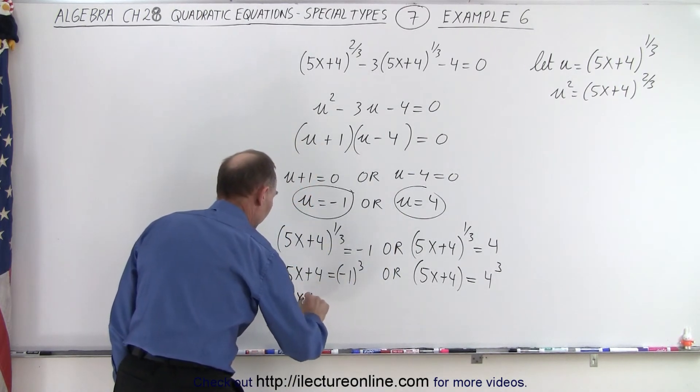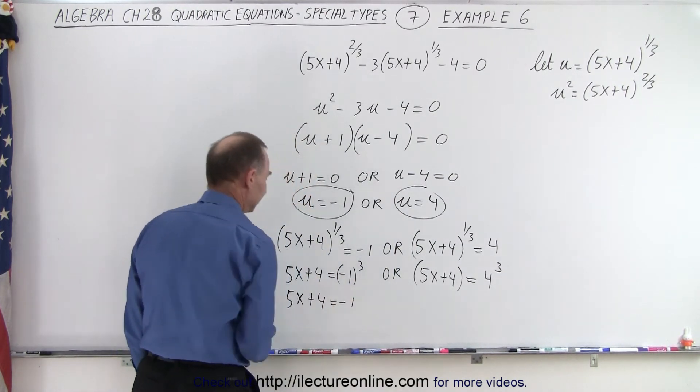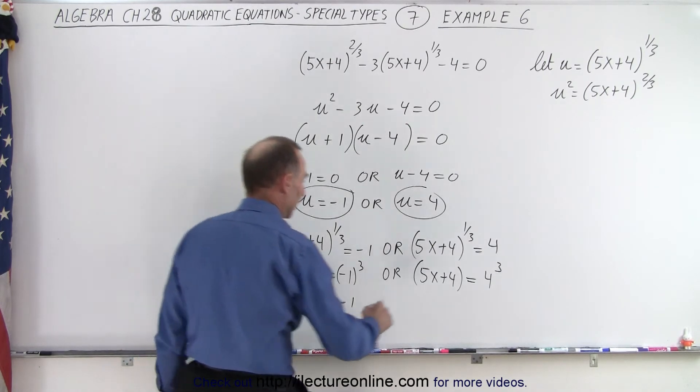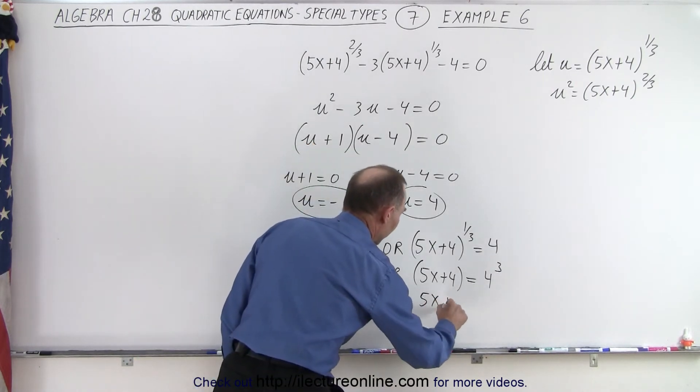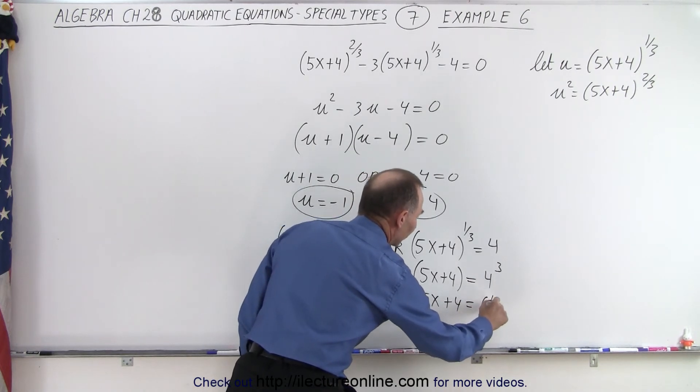So in this case, we get 5x plus 4 is equal to negative 1, because negative 1 cubed is negative 1. And here we can write that 5x plus 4 is equal to 64.